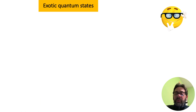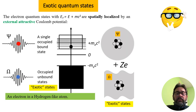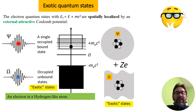Let's talk about the exotic quantum states. The electron quantum states with energy E plus MC² are spatially localized by the external attractive Coulomb potential.